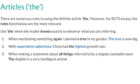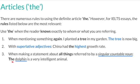We also use 'the' when we're making a statement about all things referred to by a singular countable noun. For example: 'The dolphin is a very intelligent animal.' In this case, the singular countable noun is 'dolphin'. When we say this sentence, we're basically making a statement about all dolphins — not one particular dolphin, but all dolphins. By using 'the' in this sentence, we have generalized what all dolphins are like.